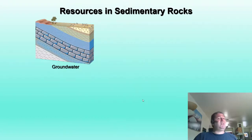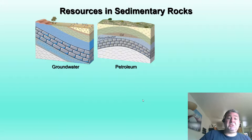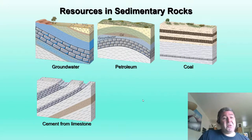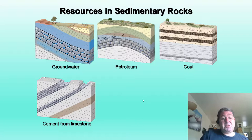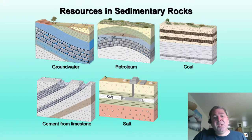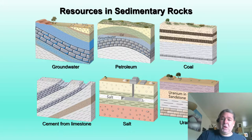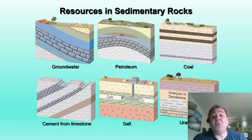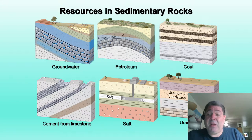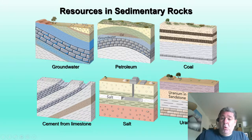There are lots of valuable resources found in sedimentary rocks: groundwater, petroleum, oil, natural gas, and coal. Cement from limestone is very important — the largest limestone quarry in the world is right outside Rogers City, Michigan. Salt is critical for eating and industrial applications, and we have the largest salt mine in the world underneath Detroit. Uranium is also found in sandstone in what's called a roll front deposit, where uranium moves through with groundwater.